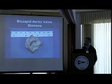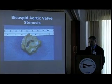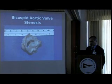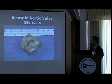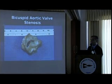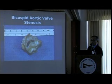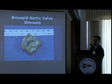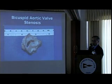Bicuspid valves come in all different degrees of damage. They can be heavily calcified — you can see how the opening of the valve can be very small. This can be okay when patients do the usual activity around the house. Usually the heart is just strong enough to pump about five liters of blood per minute through a hole like this. This just tells you how amazing the heart is.